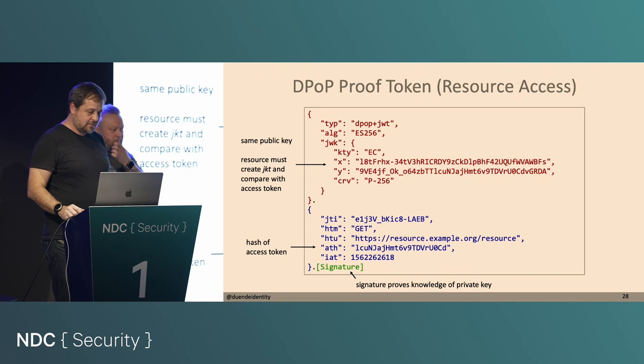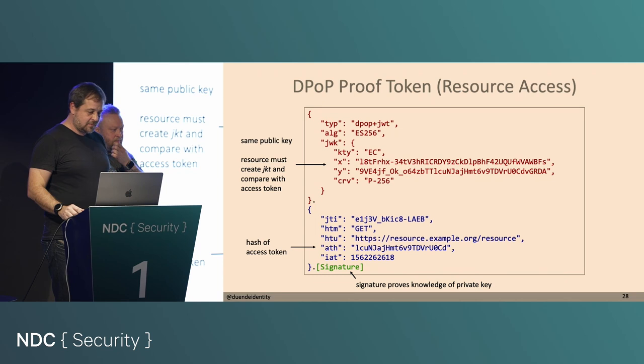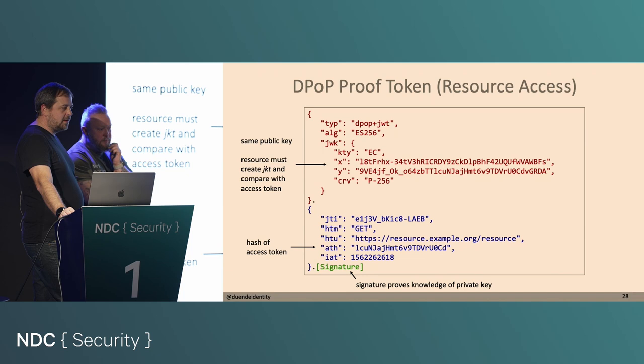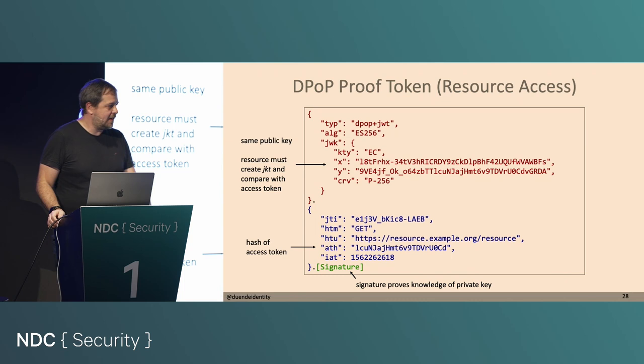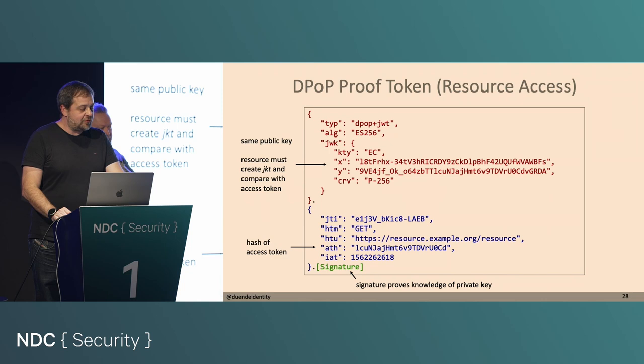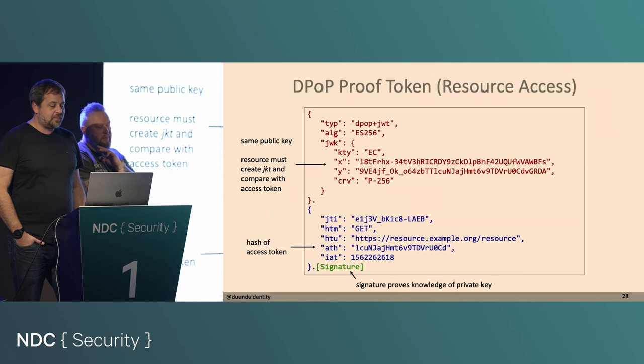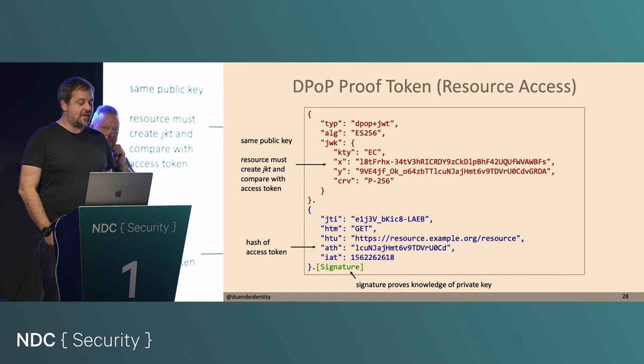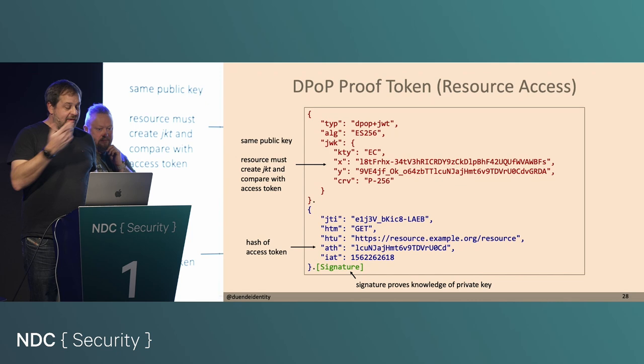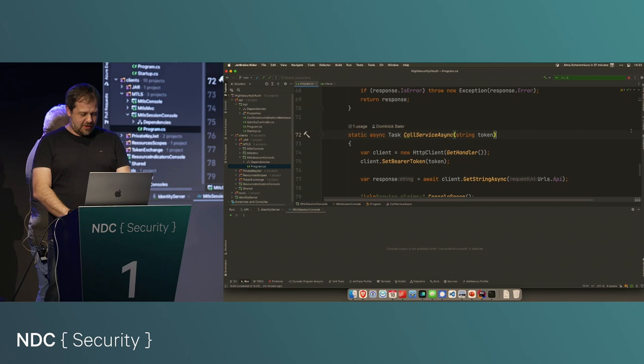When it comes to access tokens, the JTI isn't really checked on the API side because access tokens are used multiple times by the clients. The replay detection applies to proof tokens, not access tokens. That's a big point — you have to implement it. You need to have at minimum a policy for freshness: what's the oldest issued-at you would accept.